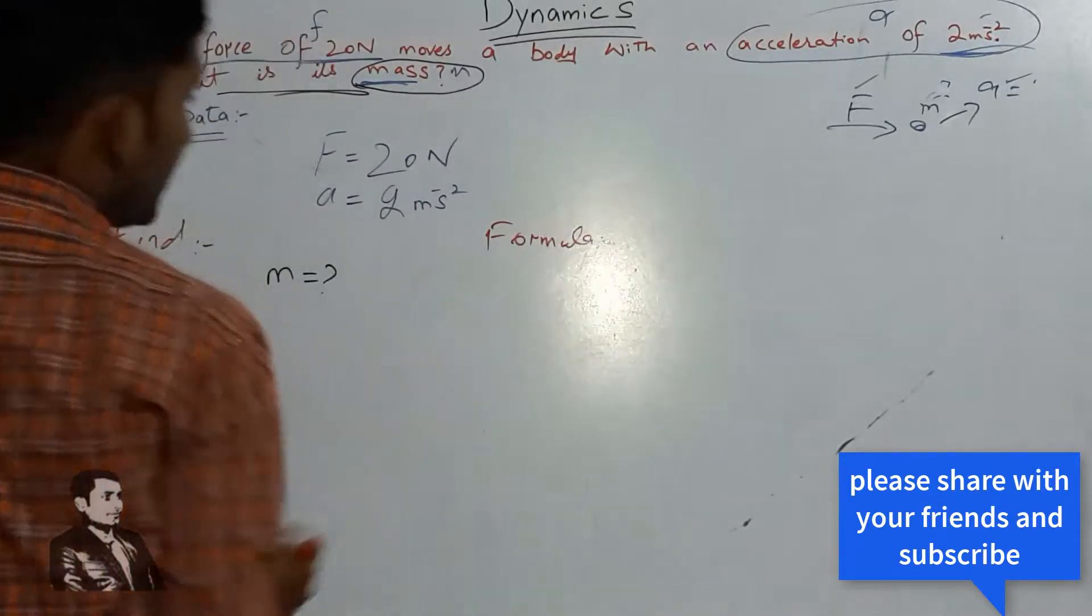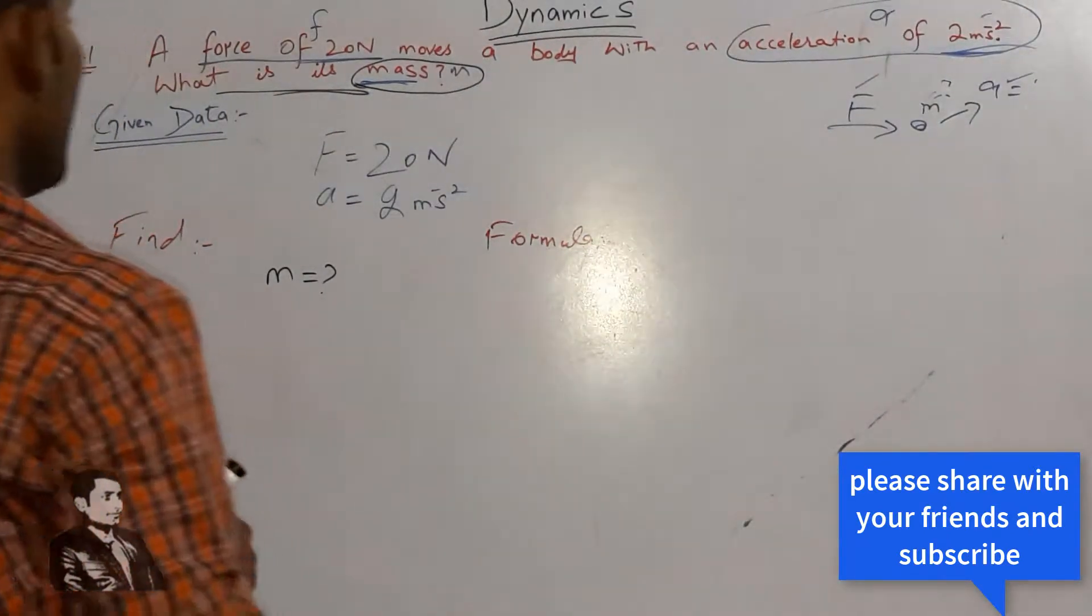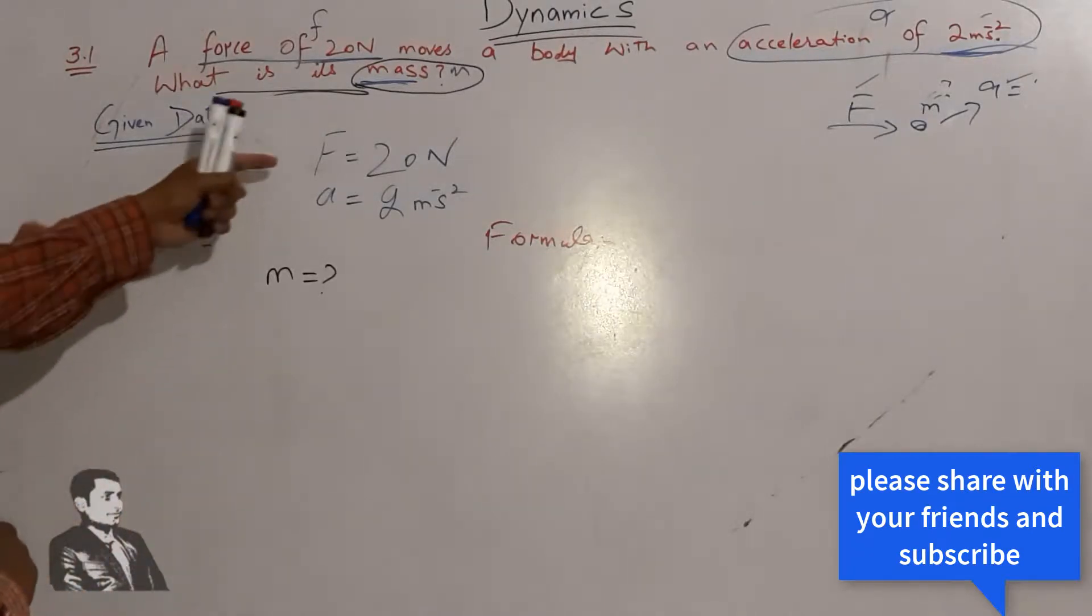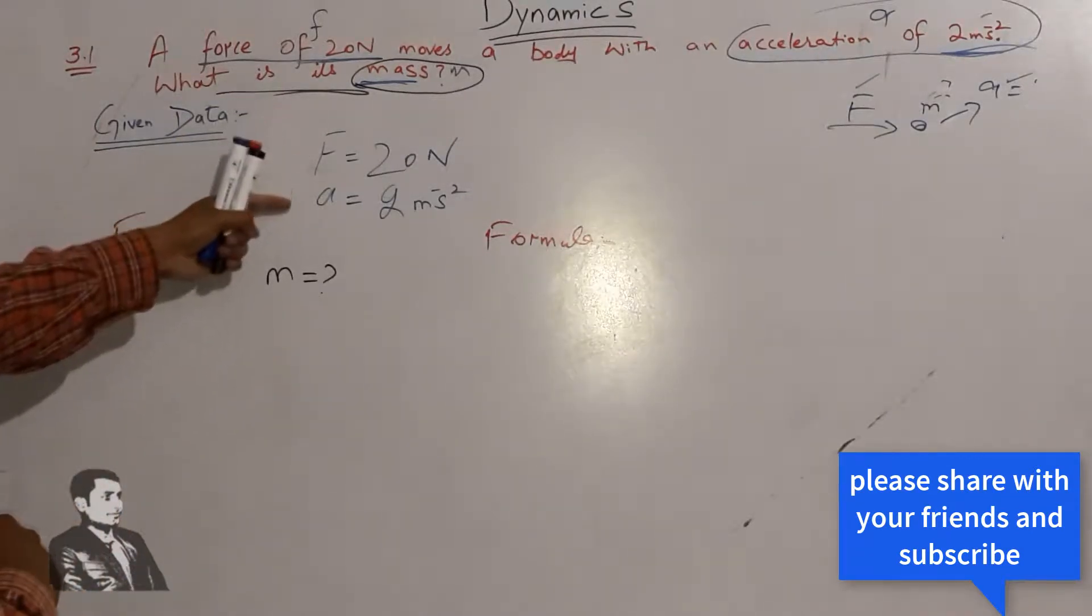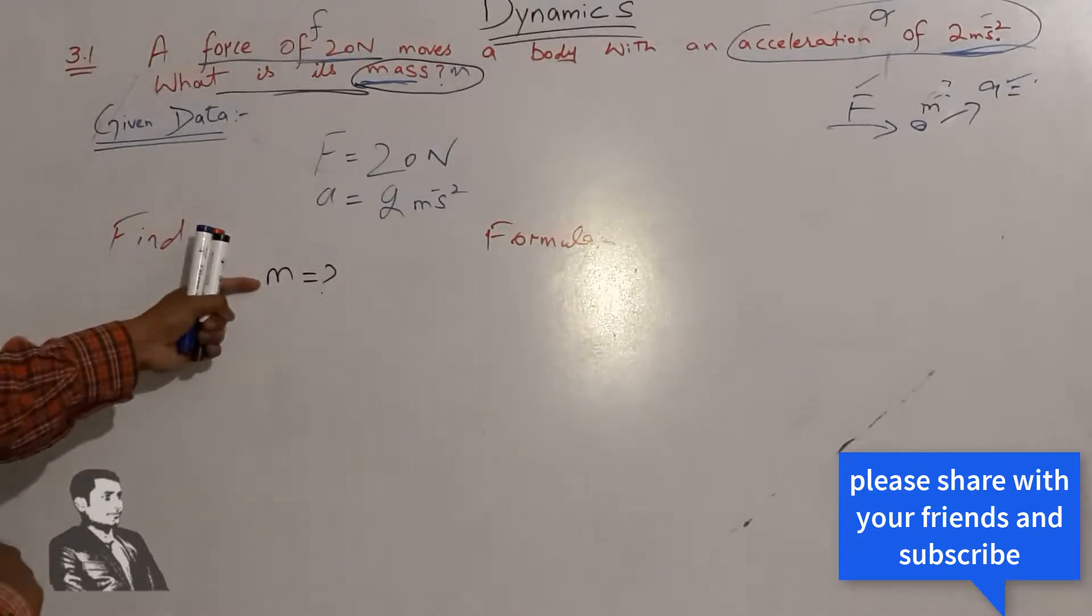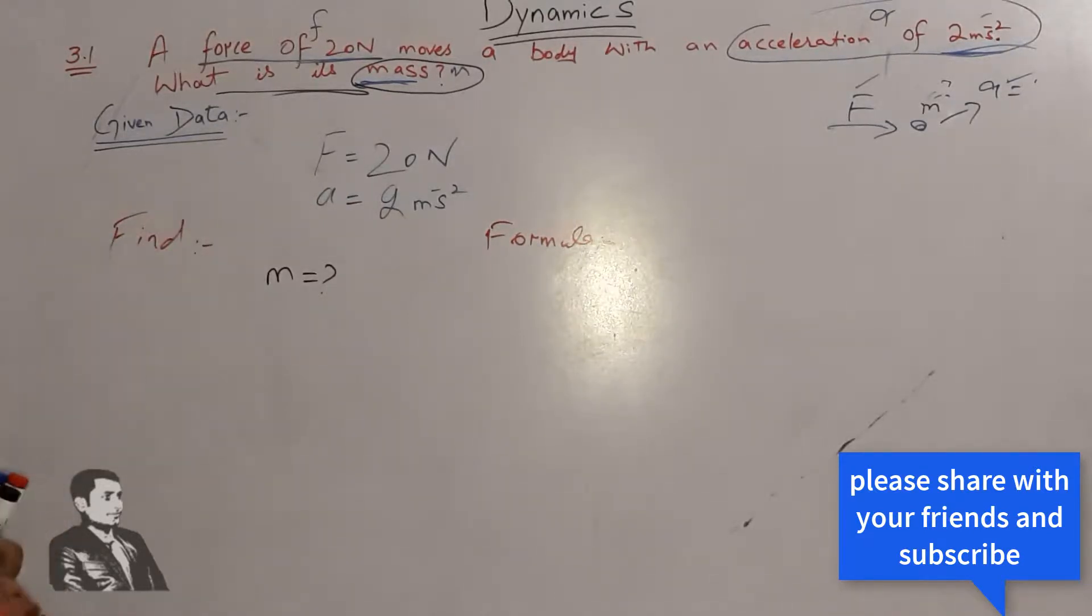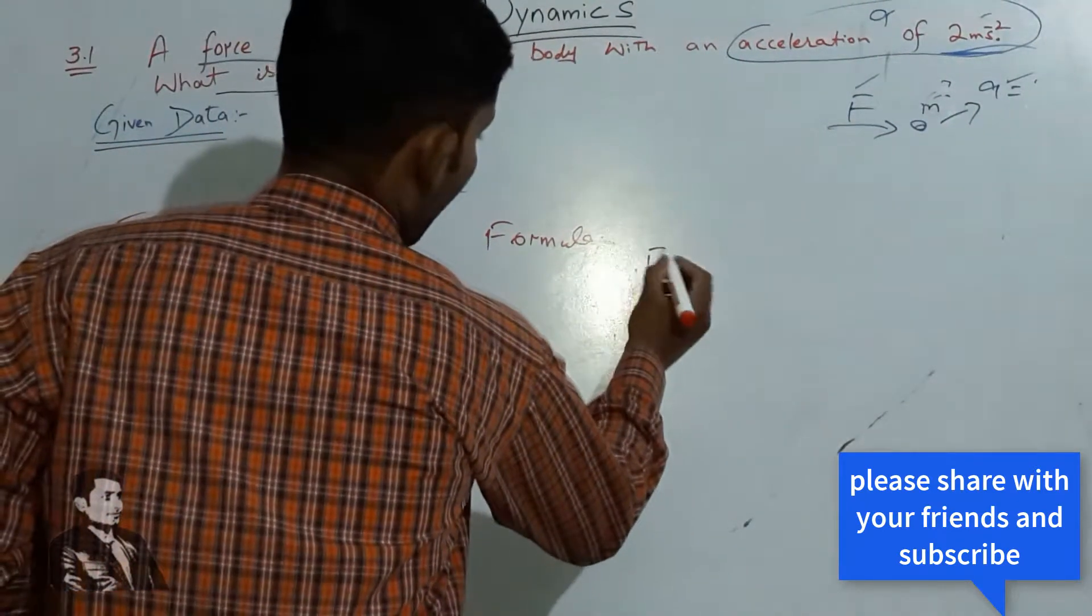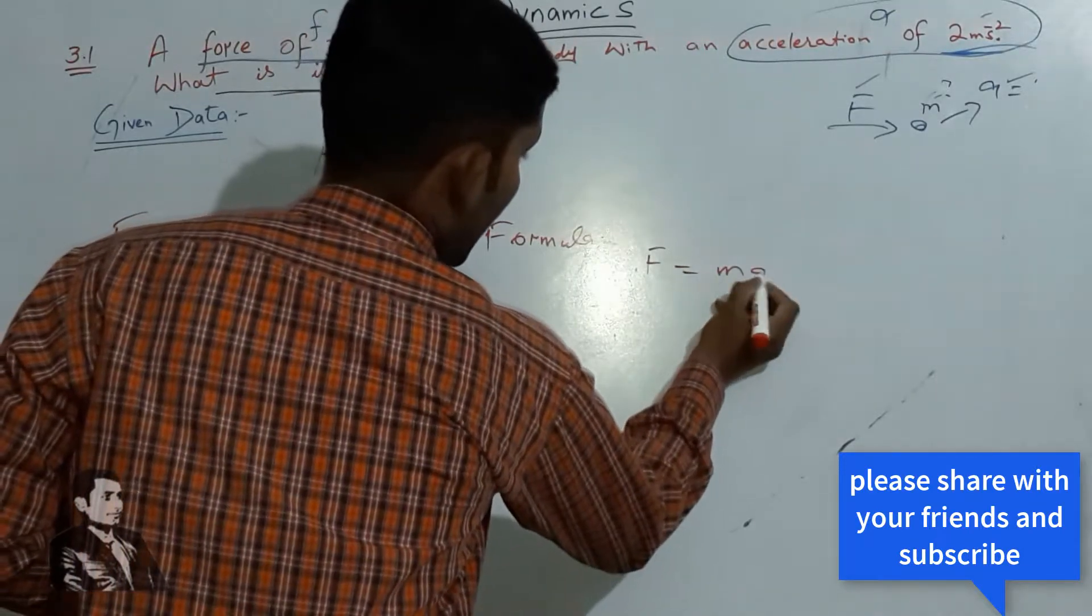What formula we will use here? Very simple. As we know that we have force equals mass times acceleration. So F equals to m times a.